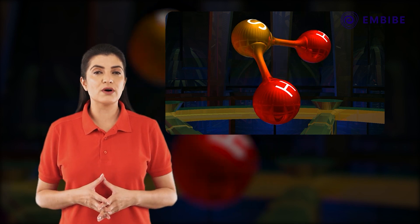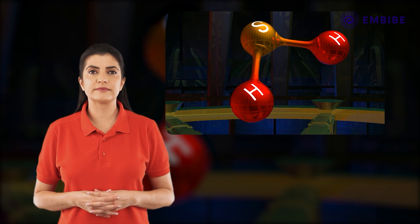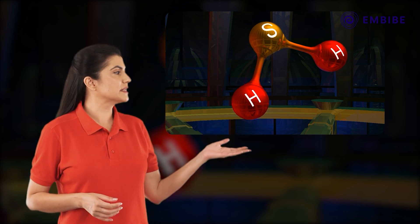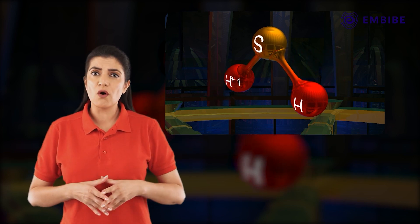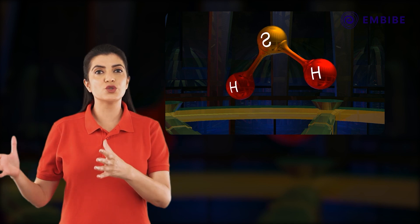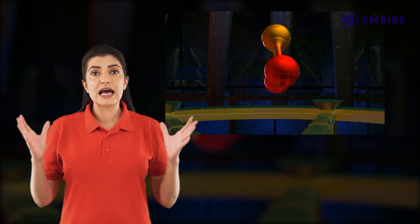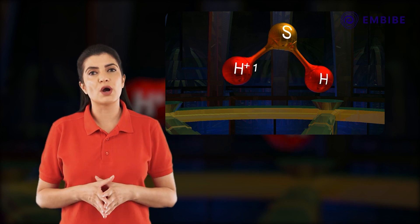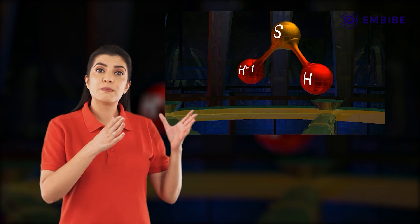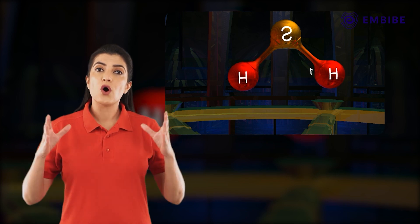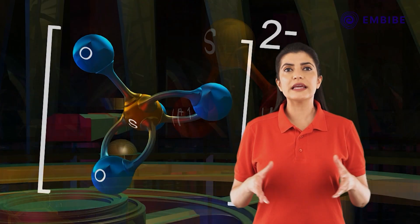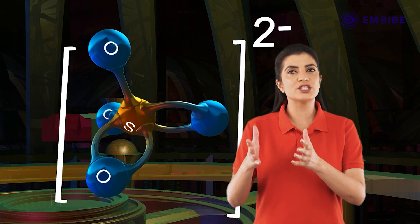To calculate the oxidation number of sulfur in the H₂S molecule: the oxidation number of hydrogen is +1, and there are two hydrogen atoms in H₂S, so the total oxidation number contribution of hydrogen is +2. Since the sum of oxidation numbers in a neutral molecule is zero, +2 plus the oxidation number of sulfur equals zero. Therefore, the oxidation number of S in H₂S is −2.